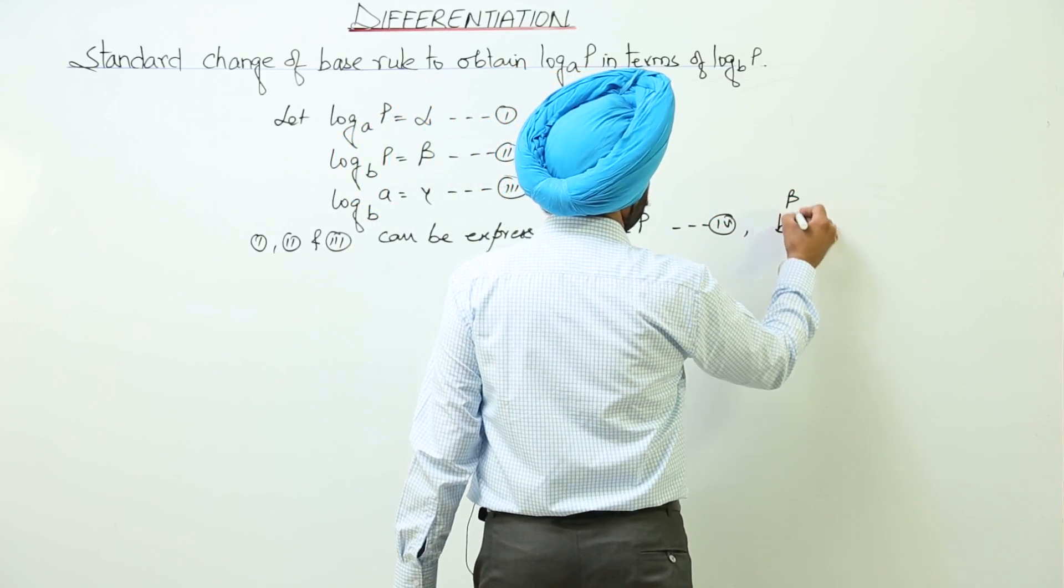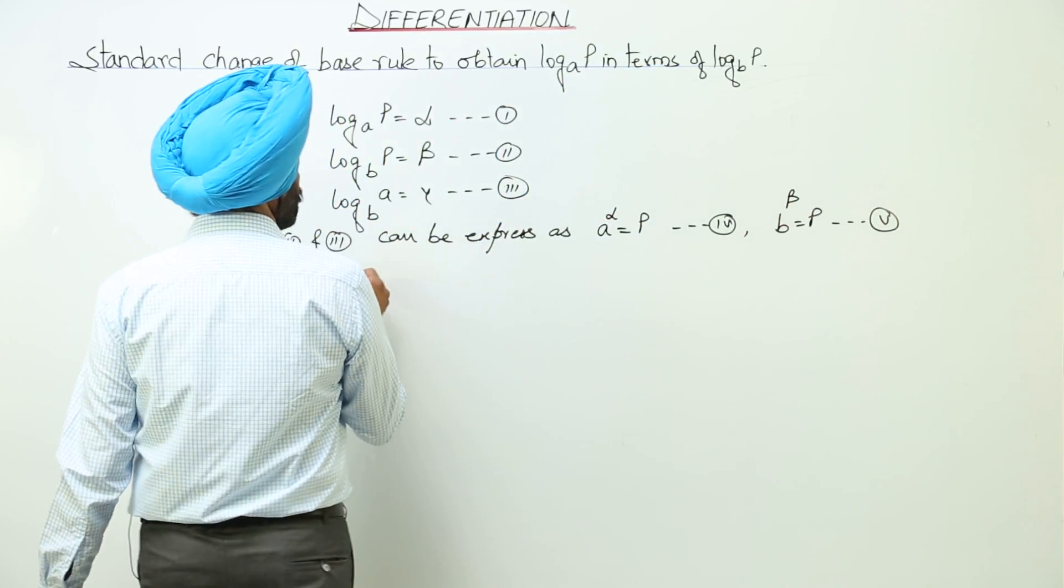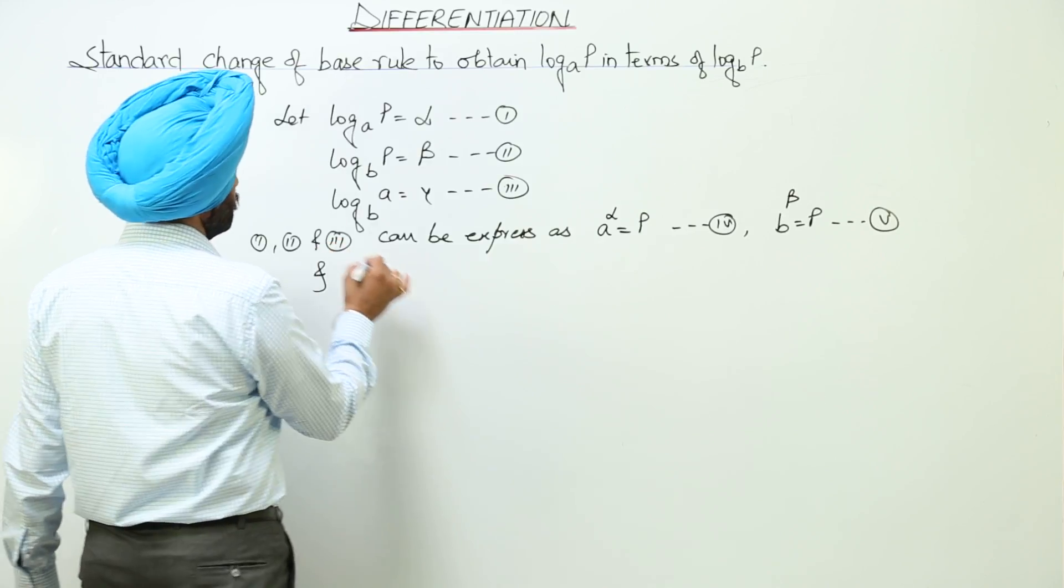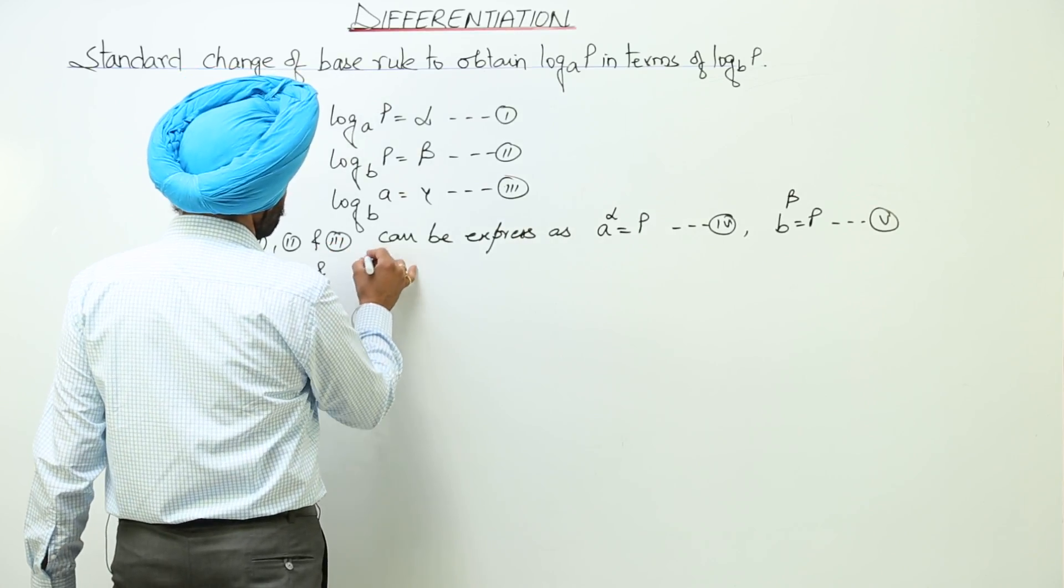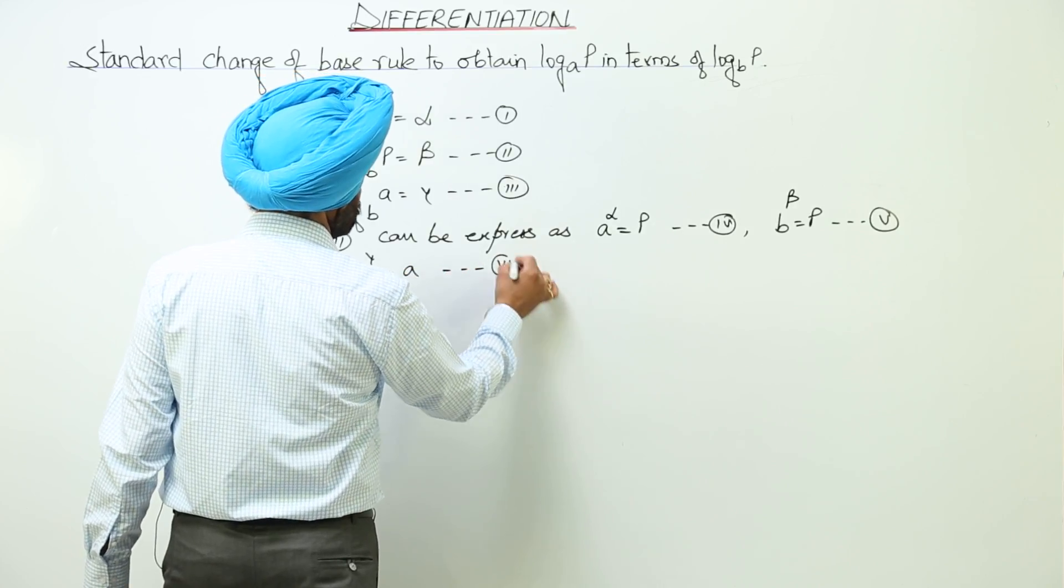B to the power beta equals p. Let this be equation 5. And b to the power gamma equals a. Let this be equation 6.